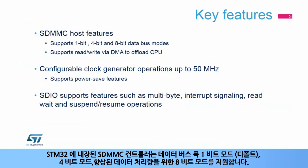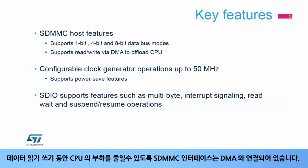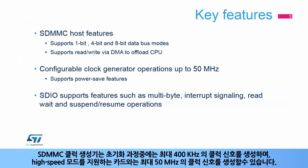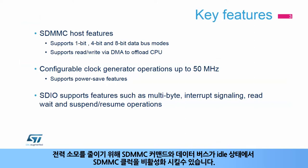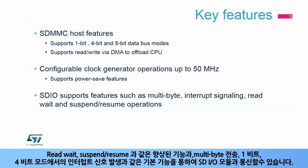The SDMMC controller integrated inside STM32 products supports data bus widths of 1-bit mode (default), 4-bit mode, and 8-bit mode for enhanced data throughput. The SDMMC interface interconnects with the DMA to offload the CPU during data read or write transfer periods. The SDMMC clock generator can generate signals up to 400 kHz for the initialization phase and up to 50 MHz for cards supporting high-speed mode. To enhance power consumption, the SDMMC clock can be disabled when the command and data buses are idle. The SDMMC controller can interface with SDIO modules with advanced features like read-wait, suspend, and resume operations.